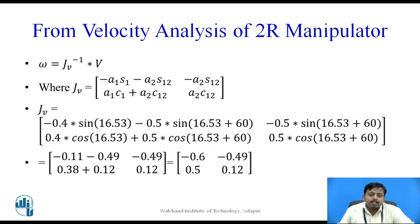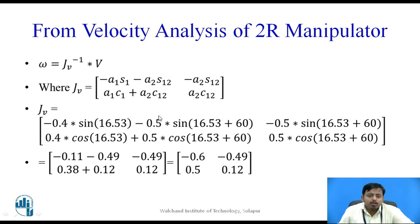Now we calculate the Jacobian matrix for velocity, Jv = [(-a1*s1 - a2*s12), (-a2*s12); (a1*c1 + a2*c12), (a2*c12)]. Substituting a1 = 0.4, theta-1 = 16.53°, a2 = 0.5, and theta-12 = 16.53° + 60° = 76.53°, we obtain the 2×2 matrix: [(-0.6, -0.49); (0.5, 0.12)].